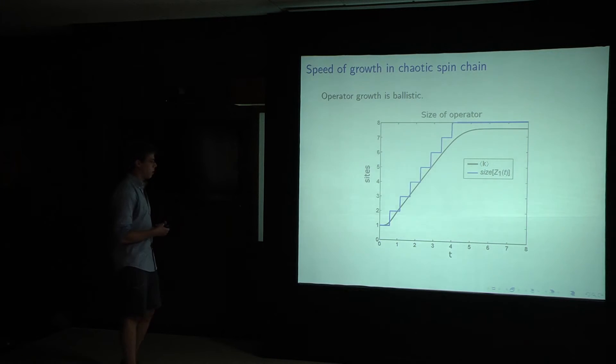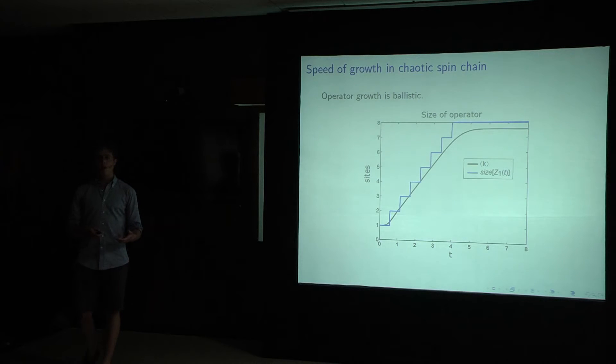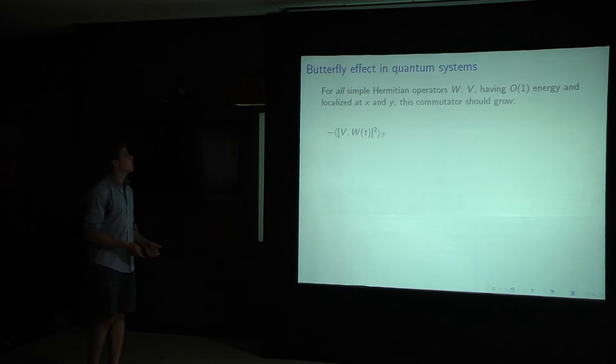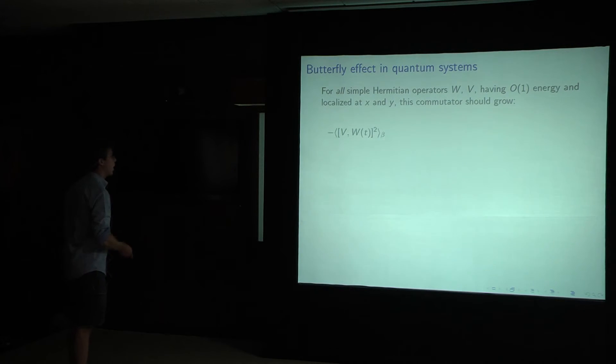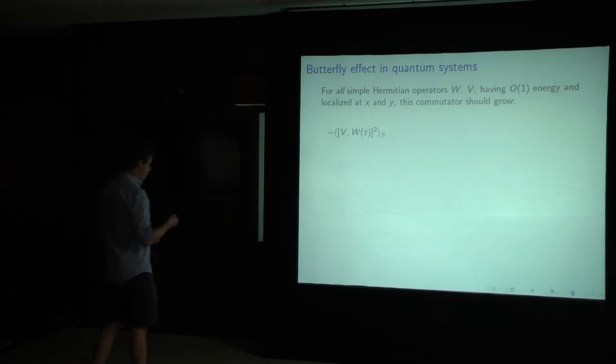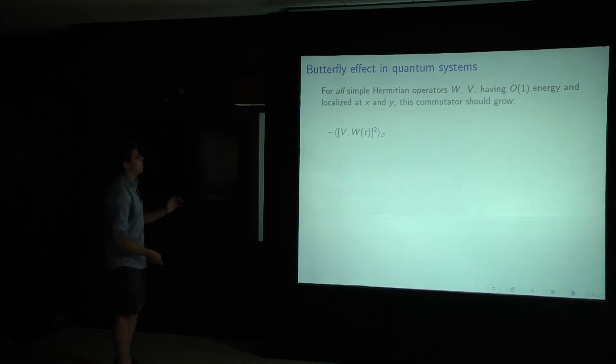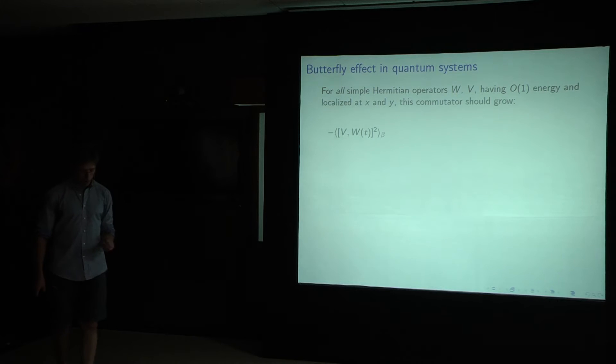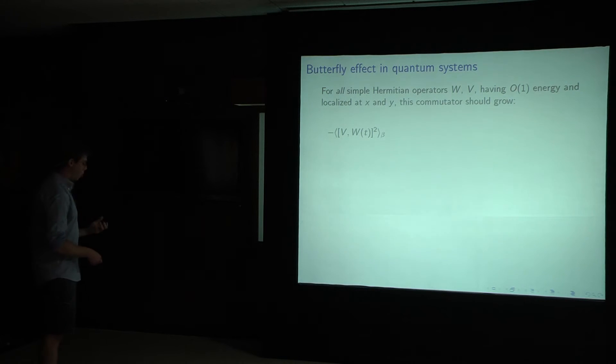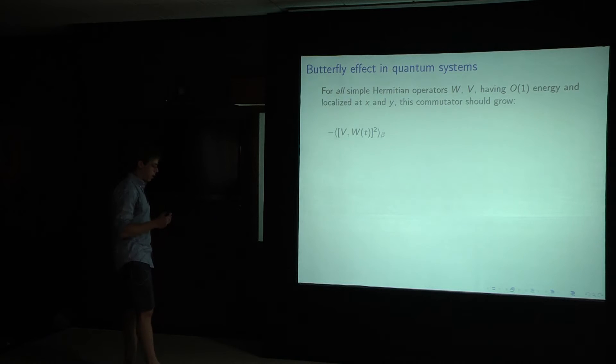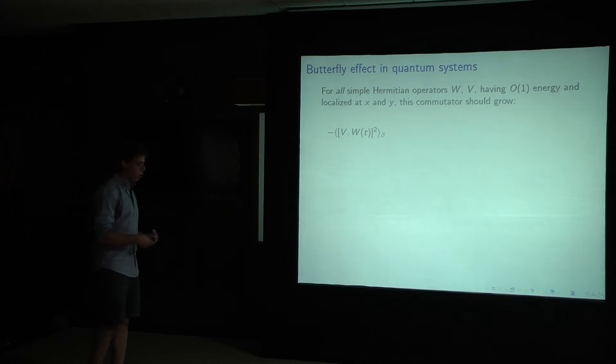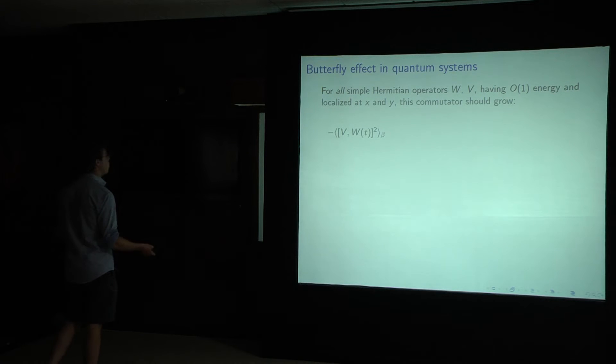So, now that we understand that local operators grow linearly under chaotic time evolution, we can address the question of the butterfly effect. That is, how does the insertion of an operator at one point, a local operator at one place, affect distant degrees of freedom? And the way we're going to do that is with this commutator that I mentioned before. Let me reiterate, this commutator is telling me the effects of perturbations of W on later measurements of V, and vice versa. And my claim is that for all simple Hermitian operators, W and V, having order one energy, order one is important because these should be simple, these should be small perturbations, so not have energy large compared to the system size.